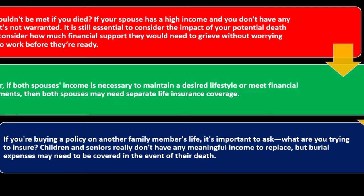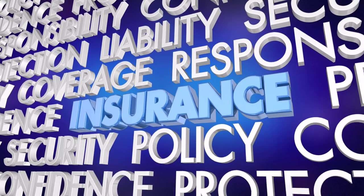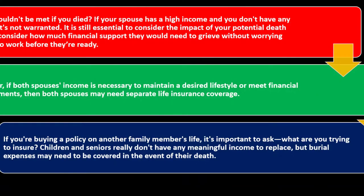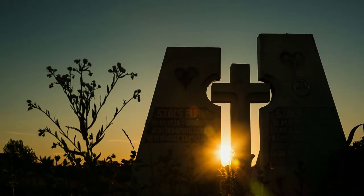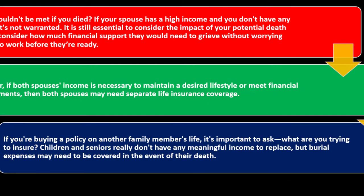If you're buying a policy on another family member's life, it's important to ask: what are you trying to insure? Children and seniors don't have any meaningful income to replace, but burial expenses may need to be covered. Insurance salespeople might try to sell life insurance for everybody, but if you're talking about children or seniors with no income and no dependents, you need to think about the rationale — whether you're covering funeral costs, self-insuring, or locking in a cheap policy early.